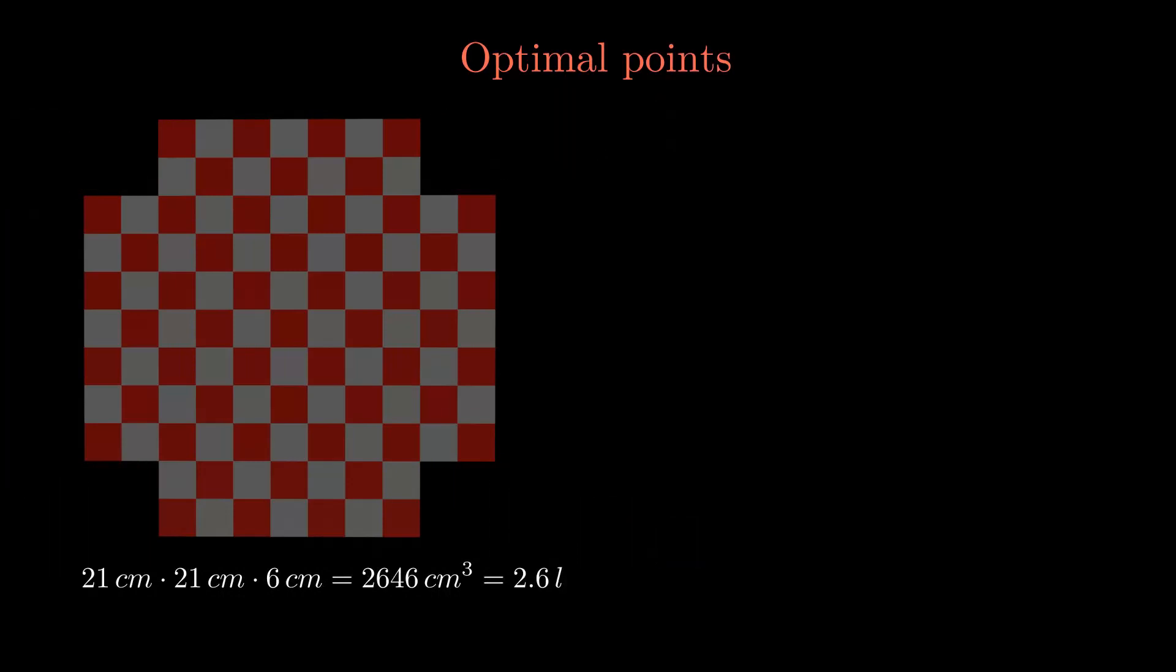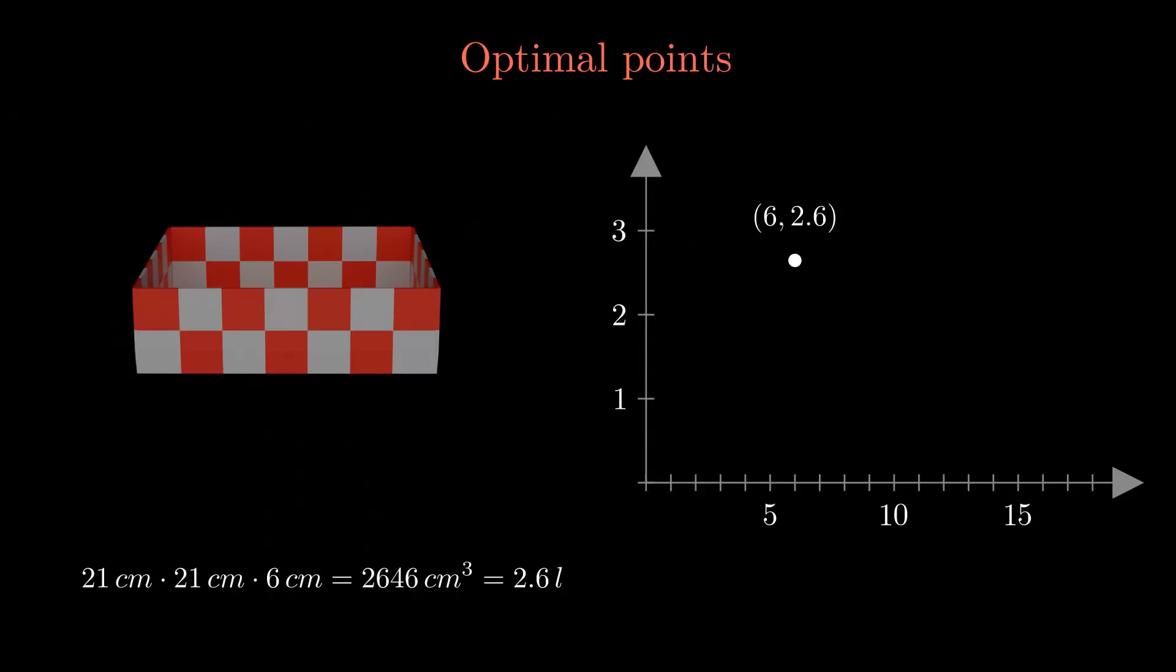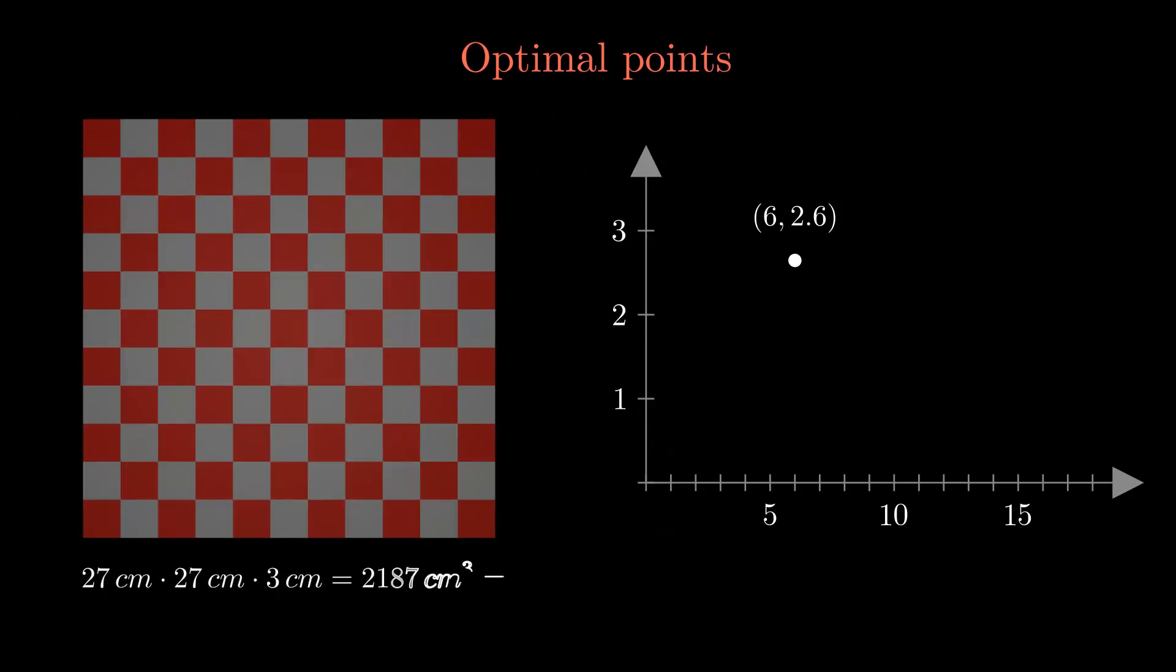Let's run through a few examples. When the removed parts are 6 cm long, the final box has a length and width of 21 cm and a height of 6 cm, which yields a volume of 2.6 liters. Of course, if you don't like centimeters, no big deal, you can simply replace them by inches. Your sheet of paper will be larger, but the numbers will stay the same.